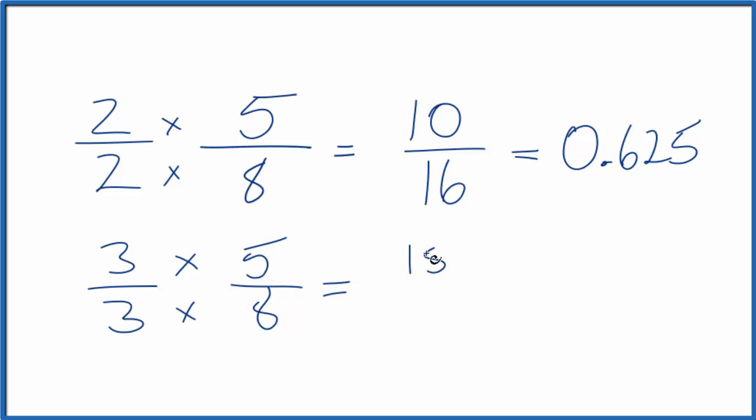3 times 5, that's 15. 3 times 8 is 24. If you divide 5 eighths or 15 twenty-fourths, you get, again, the same number, 0.625.